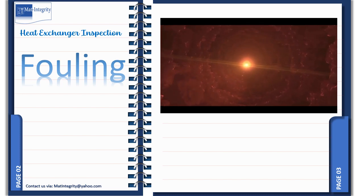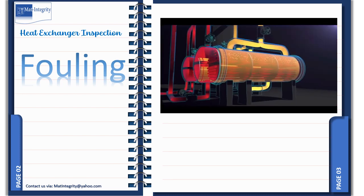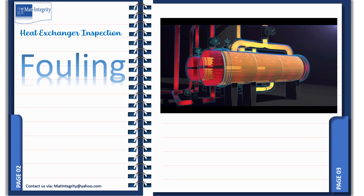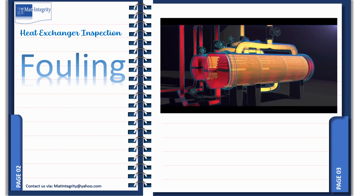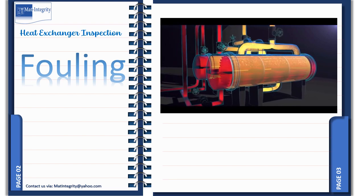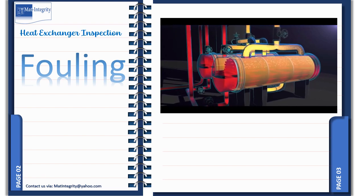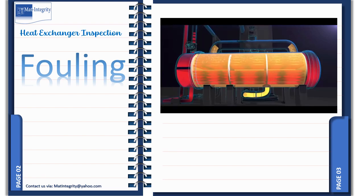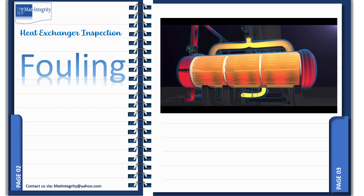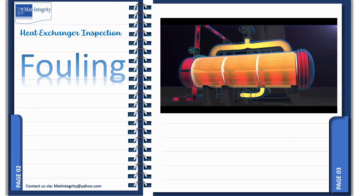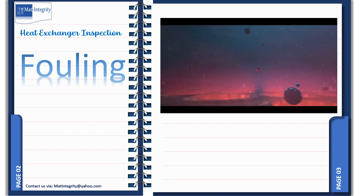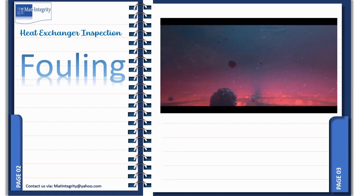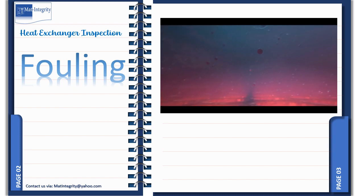Fouling affects the energy consumption of industrial processes and it can also decide the amount of extra material required to provide extra heat transfer surface employed in heat exchangers to compensate for the effects of fouling. In addition, where the heat flux is high, as in steam generators, fouling can lead to local hot spots and ultimately it may result in mechanical failure of the heat transfer surface.